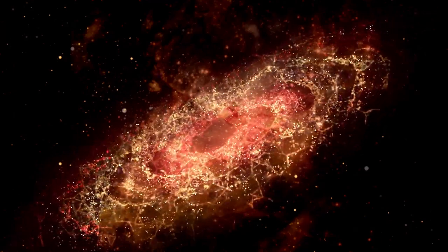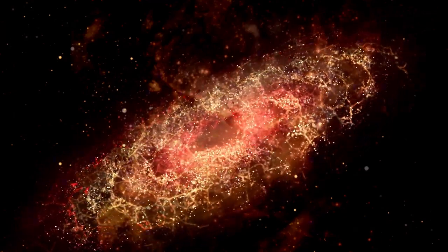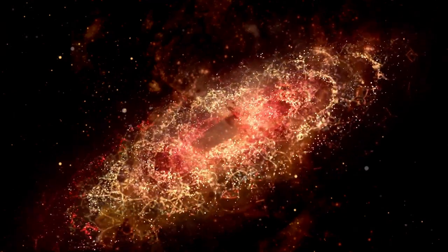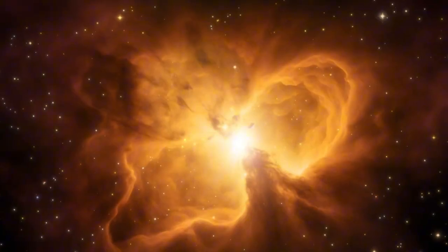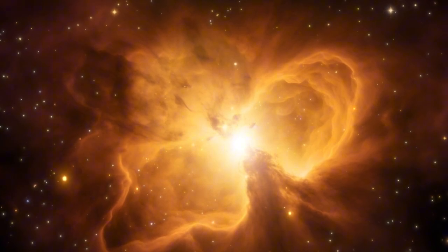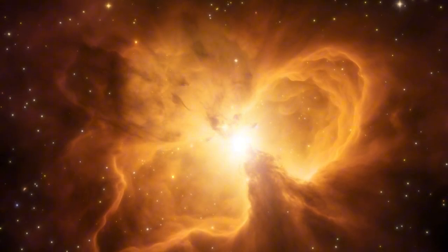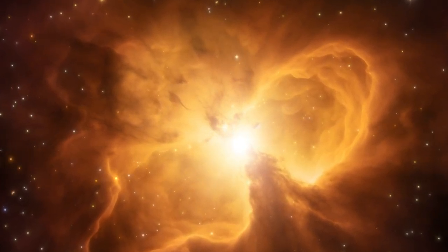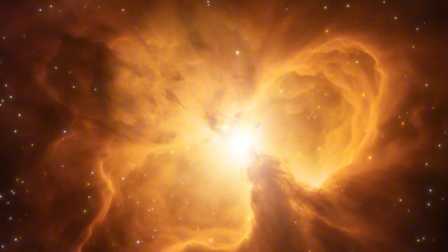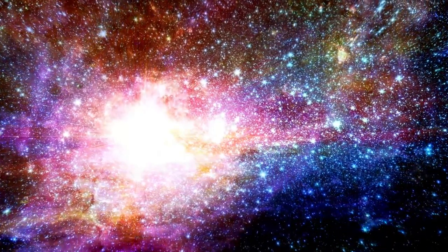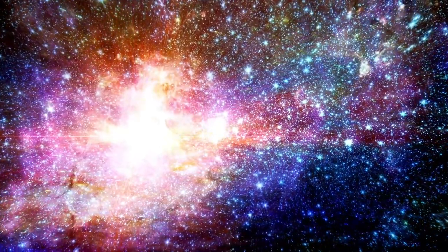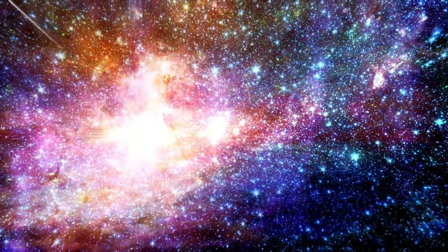The clustering of galaxies and the formation of interconnected filamentary structures known as the cosmic web strongly support the Big Bang Theory. The way galaxies are distributed across the universe aligns with the gravitational effects expected from the initial dense and expanding state proposed by the theory. All of these factors, including the clustering of galaxies, the cosmic web structure, and the distribution of galaxy clusters, provide strong evidence that the universe evolved from an extremely dense state and has been expanding over billions of years.